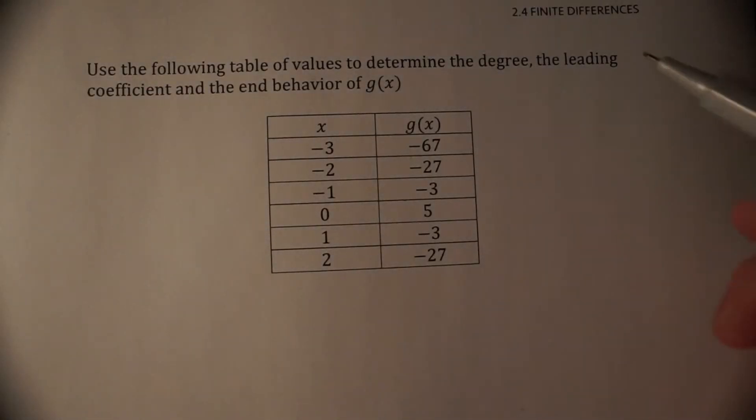Okay, so this lesson has to do with finite differences. We talked a very small amount about it at the very beginning of this unit. We can tell the degree of a polynomial by how many times we have to take the finite differences before they're all the same.